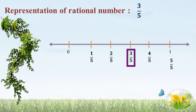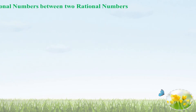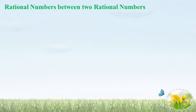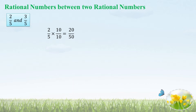How many numbers are between 2 by 5 and 4 by 5? If your answer is just 3 by 5, it is wrong in rational numbers. Let us find rational numbers between two rational numbers. The rational numbers are 2 by 5 and 3 by 5. First, find the equivalent rational number for 2 by 5. If you multiply 2 by 5 by 10 by 10, you get 20 by 50.